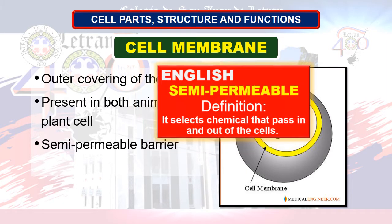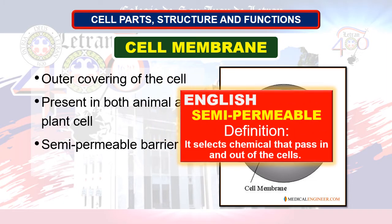What do we mean by semi-permeable? It selects the chemicals that pass in and out of the cell. If the substance is beneficial, it comes in. If it is not, or toxic, it gets out.